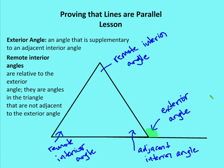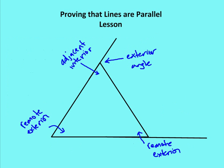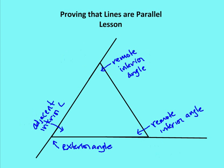The remote interior angles are relative to the exterior angle — they are the angles in the triangle that are not adjacent to the exterior angle. As I go back and forth, here I have my exterior angle on one side, and when the exterior angle moves to a different vertex, the adjacent interior angle and remote interior angles change as well, because they're all relative to where the exterior angle is placed.